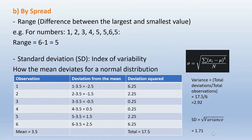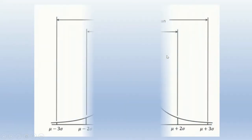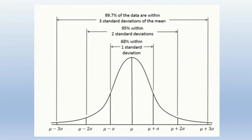We get standard deviation when our data is normally distributed. Looking at the normal distribution curve, on the x-axis we have the deviations. Mu is the mean — this symbol here is called mu — and sigma means the standard deviation.